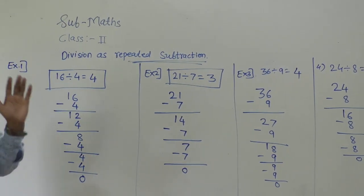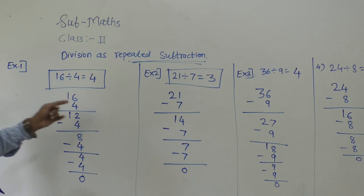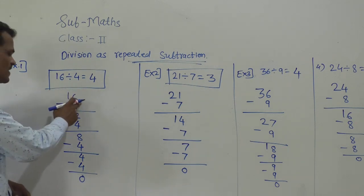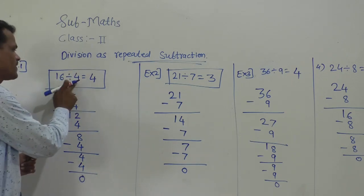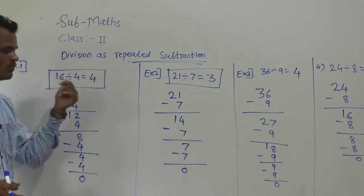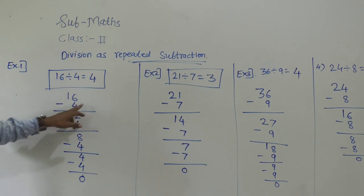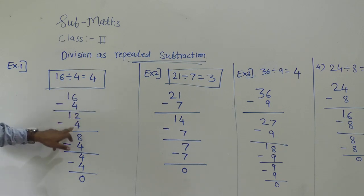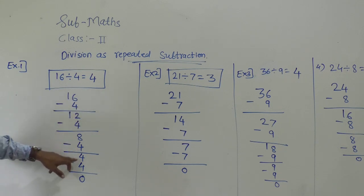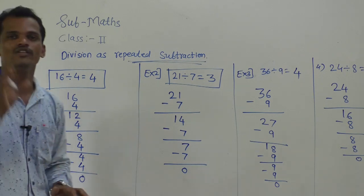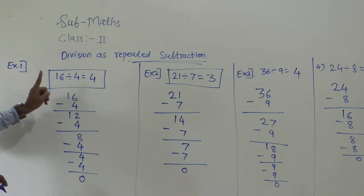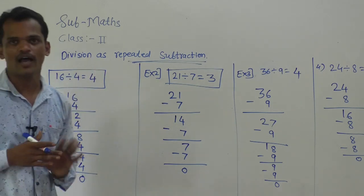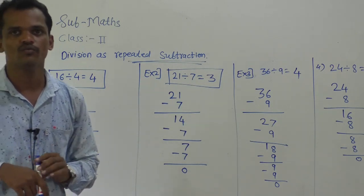Write the dividend and subtract the divisor. Every time you have to subtract the divisor from that number. 16 minus 4 is 12, 12 minus 4 is 8, 8 minus 4 is 4, and 4 minus 4 is 0. When 0 comes as the remainder, you stop. Then count how many times you subtracted and write the quotient. I hope you understood. Thank you very much.